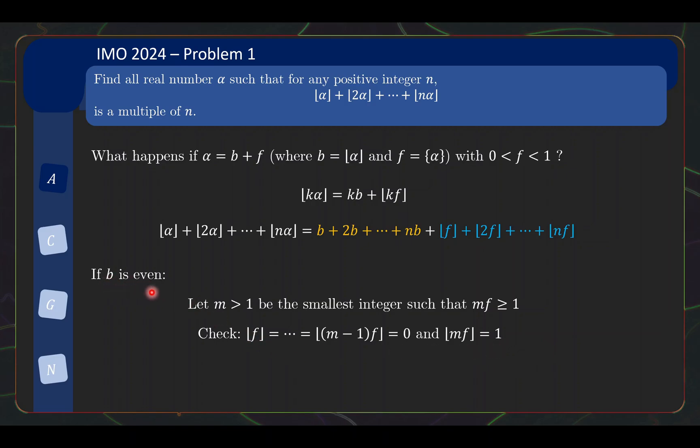Okay, so if we look at the case where b happens to be even, then we already know that this part over here is going to be always divisible by n. So if we look at the special case where n equals to m, we see that this is still divisible by m, but the expression here will be 0, 0, 0, plus 1. So this whole thing would be 1 more than a multiple of m, so it will not be divisible by m. So indeed, we have shown that whenever alpha is an even number plus a fractional part, then it will not be a valid solution.